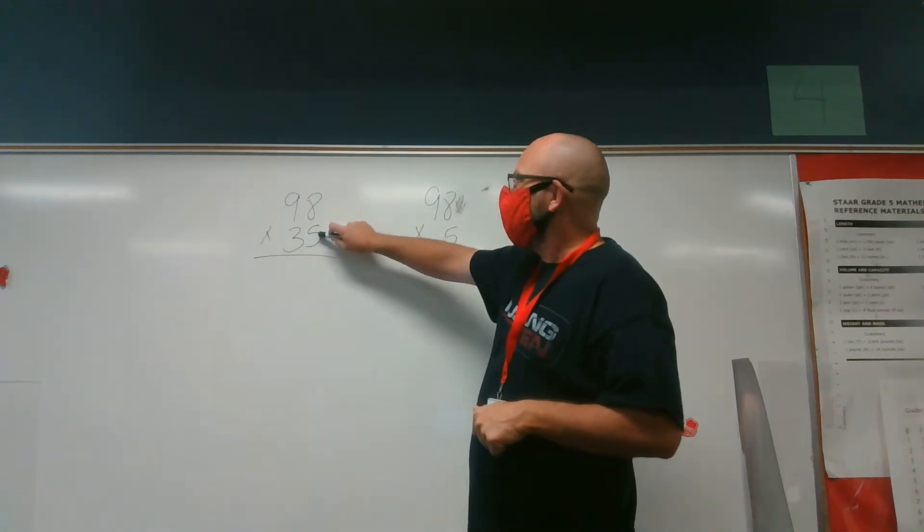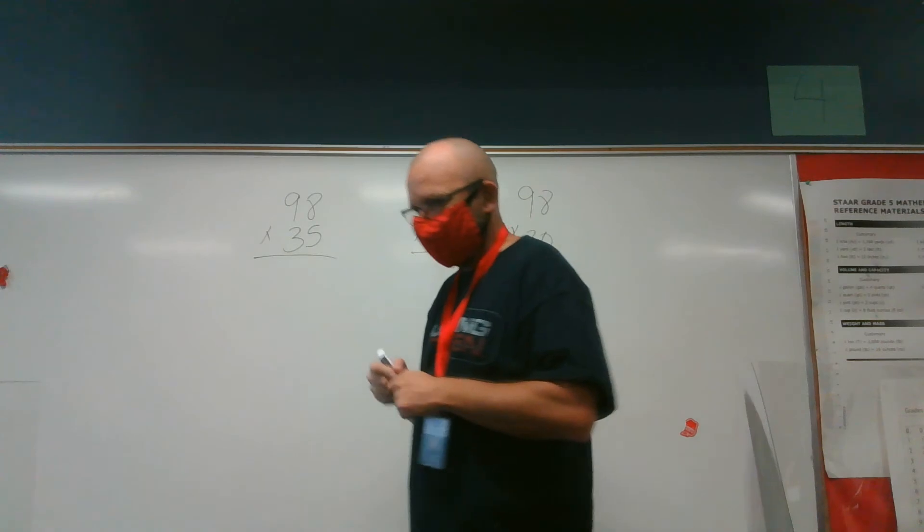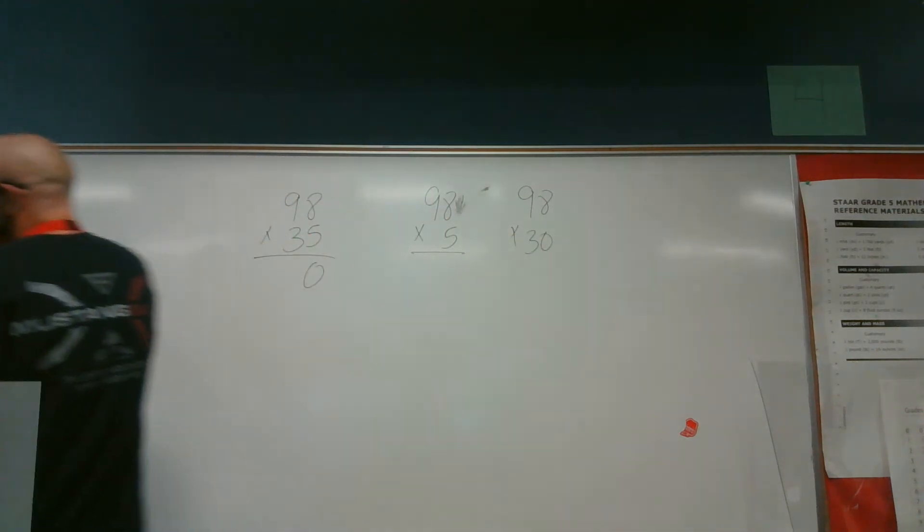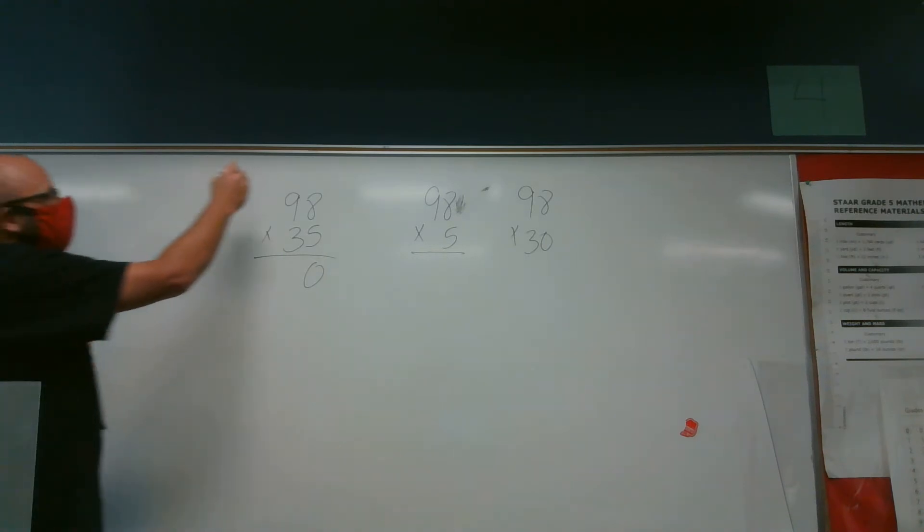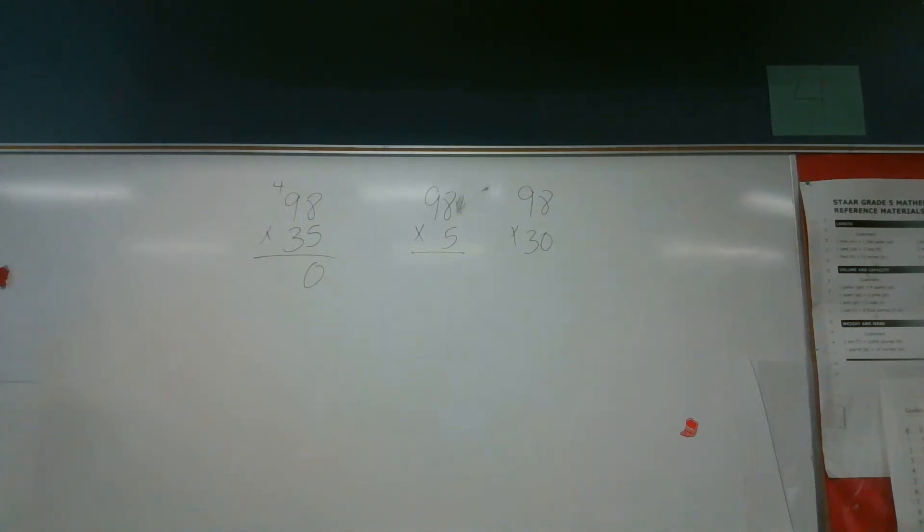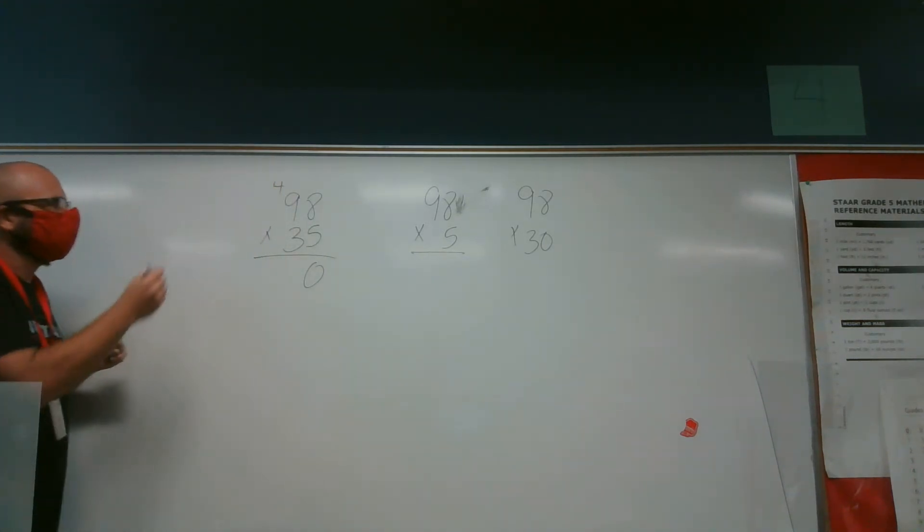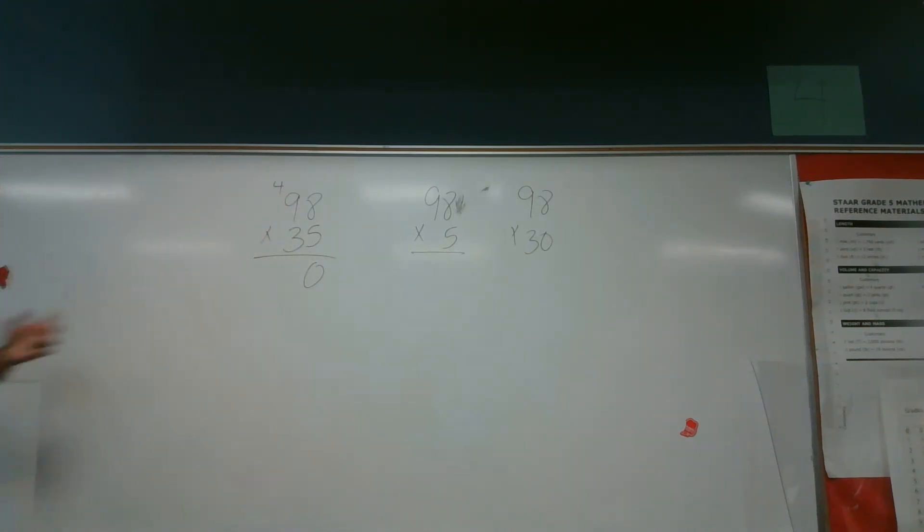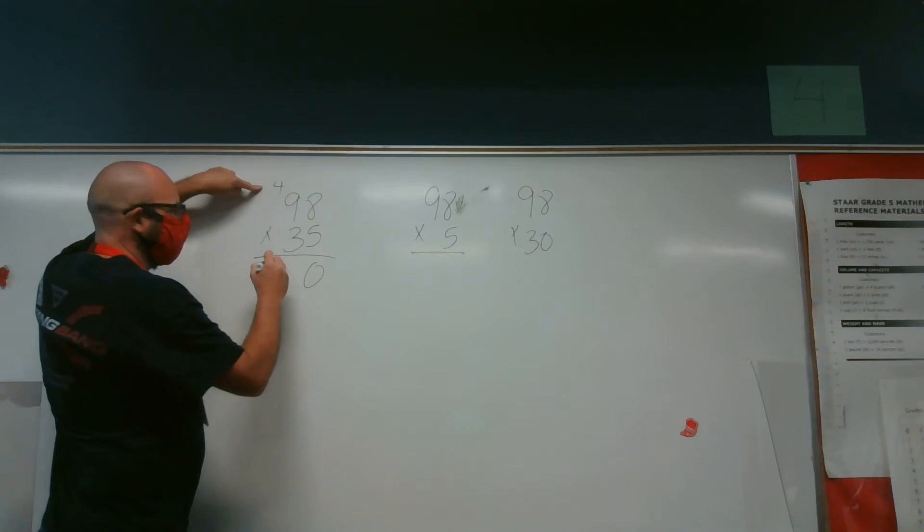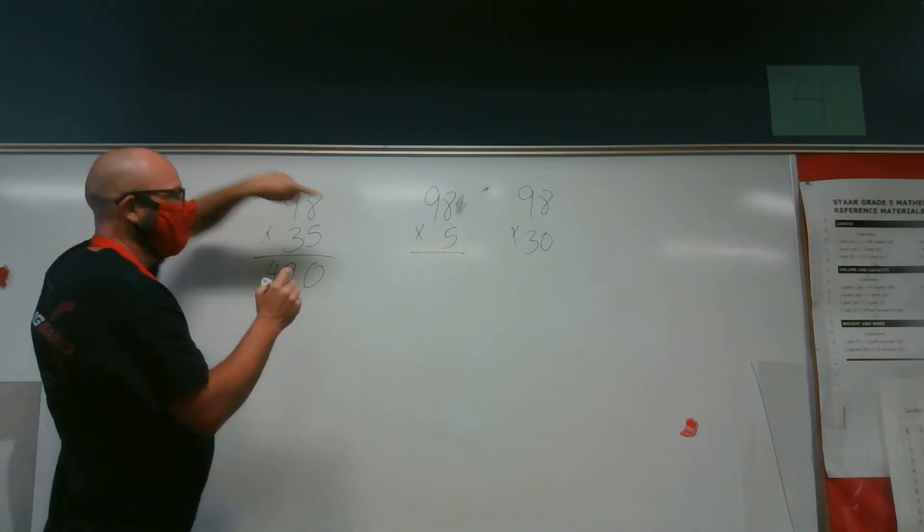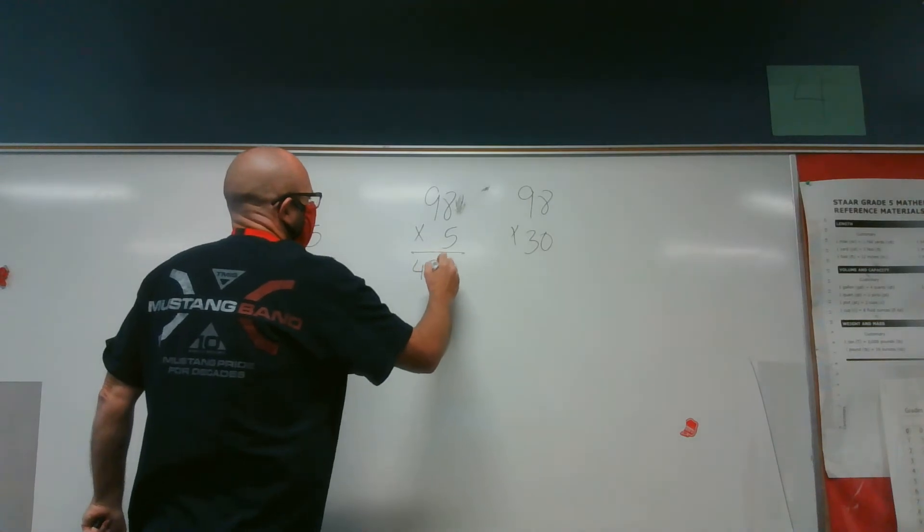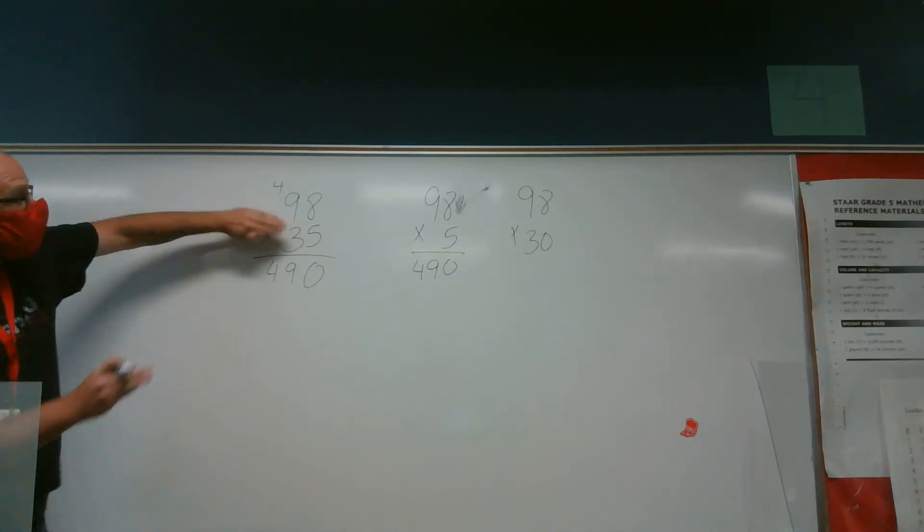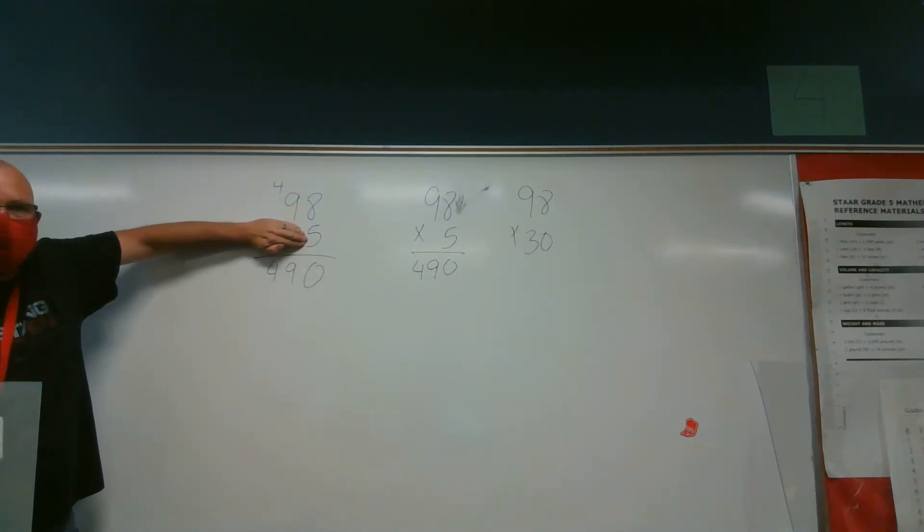Good. So we'll start in our ones place. 5 times 8 is 40. 5 times 9 is 45, plus the 4 that I carried and I forgot to write down. 49. I can tell you 98 times 5 is going to equal 490. Why? Because I just multiplied it only by 5.